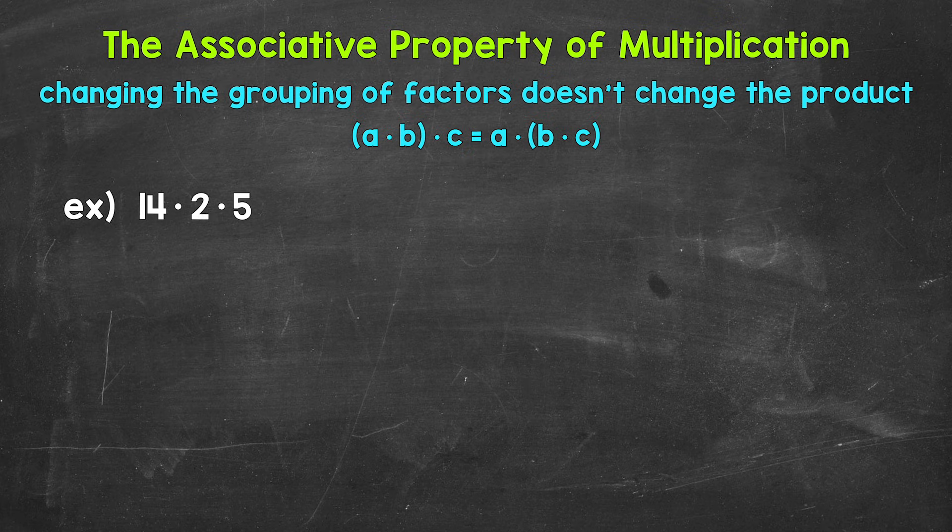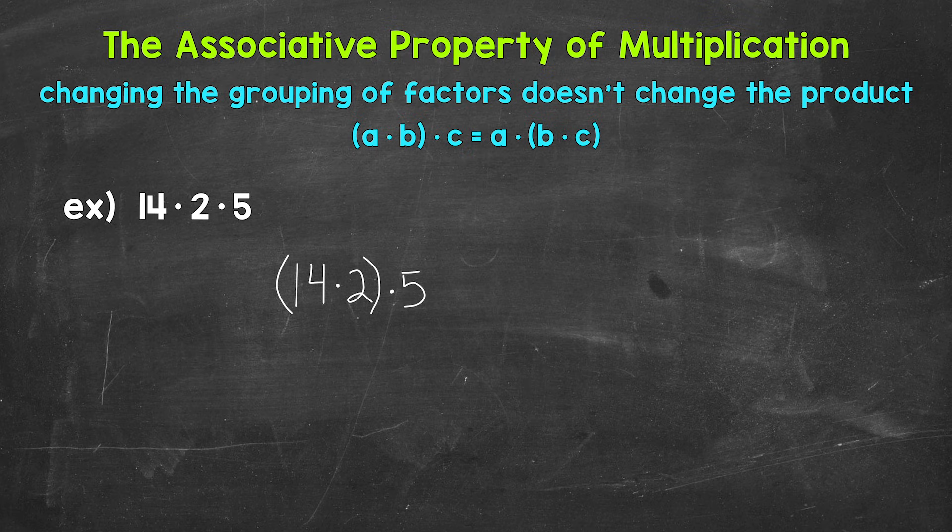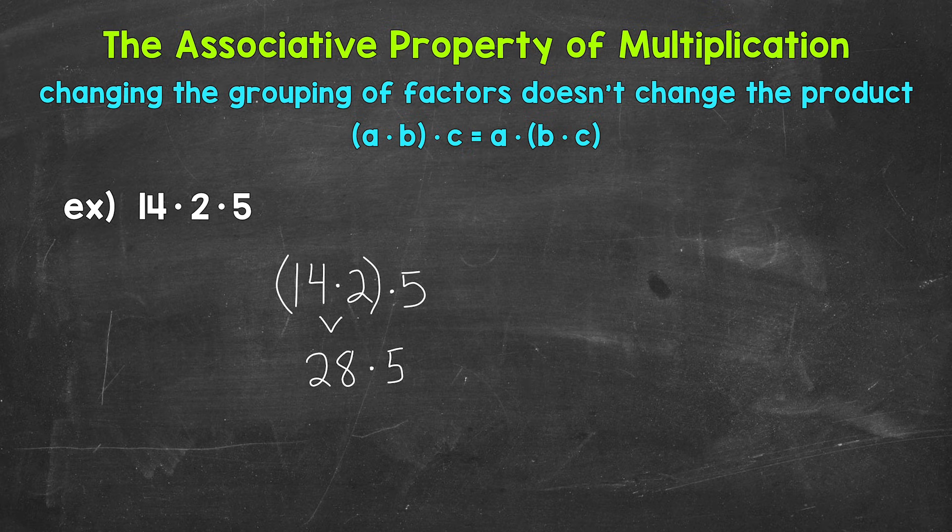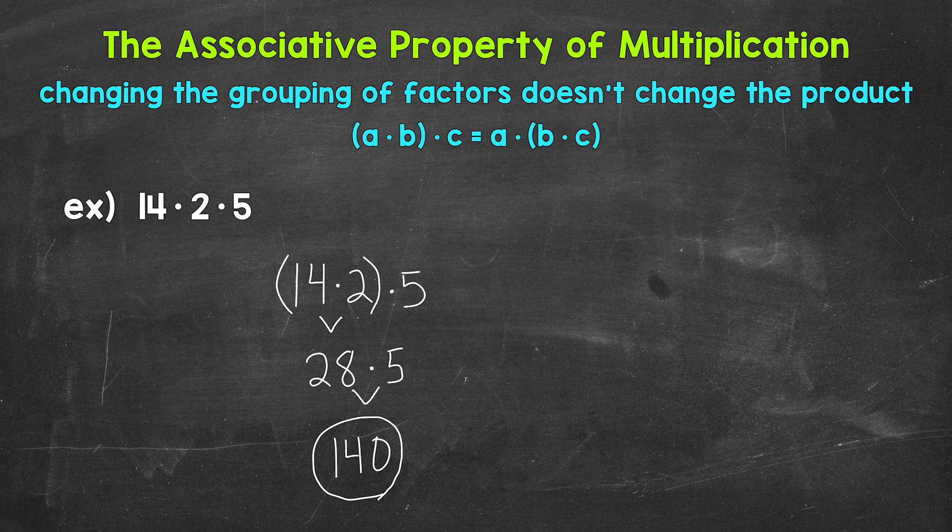Let's start by grouping 14 and 2 together and work through this. So we have (14·2)·5. Now we can multiply, starting with the parentheses. 14·2 equals 28. Bring down the multiplication sign and the 5. We end with 28·5, which equals 140.